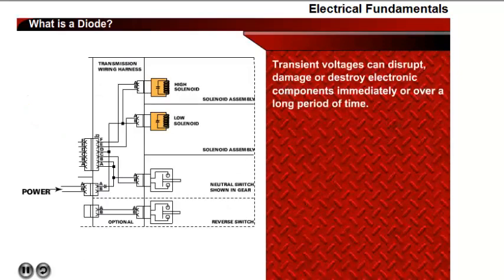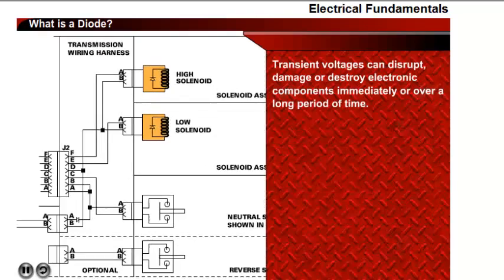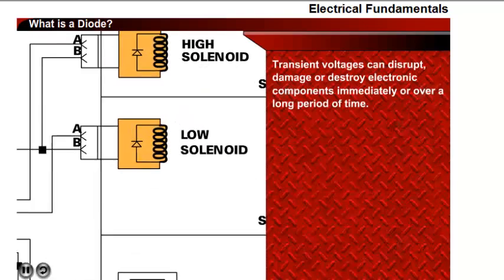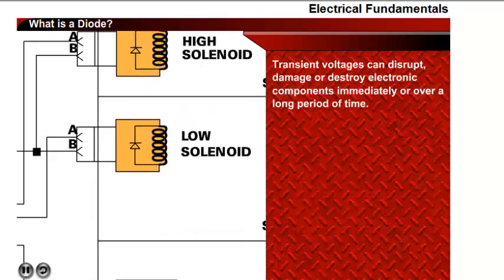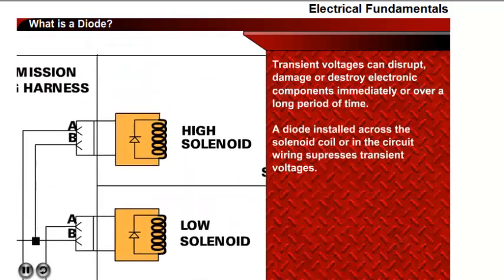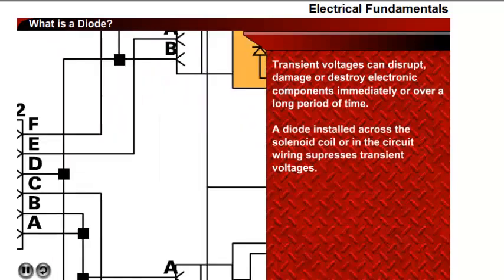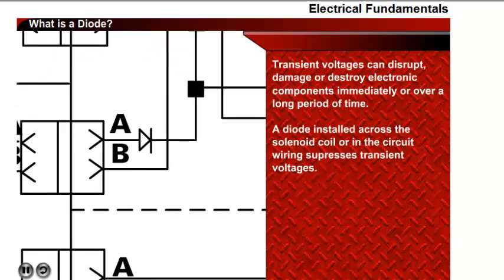Transient voltages can disrupt, damage, or completely destroy electronic components in a vehicle, either immediately or over a long period of time. Installing a diode across the solenoid coil or in the circuit wiring suppresses transient voltages.